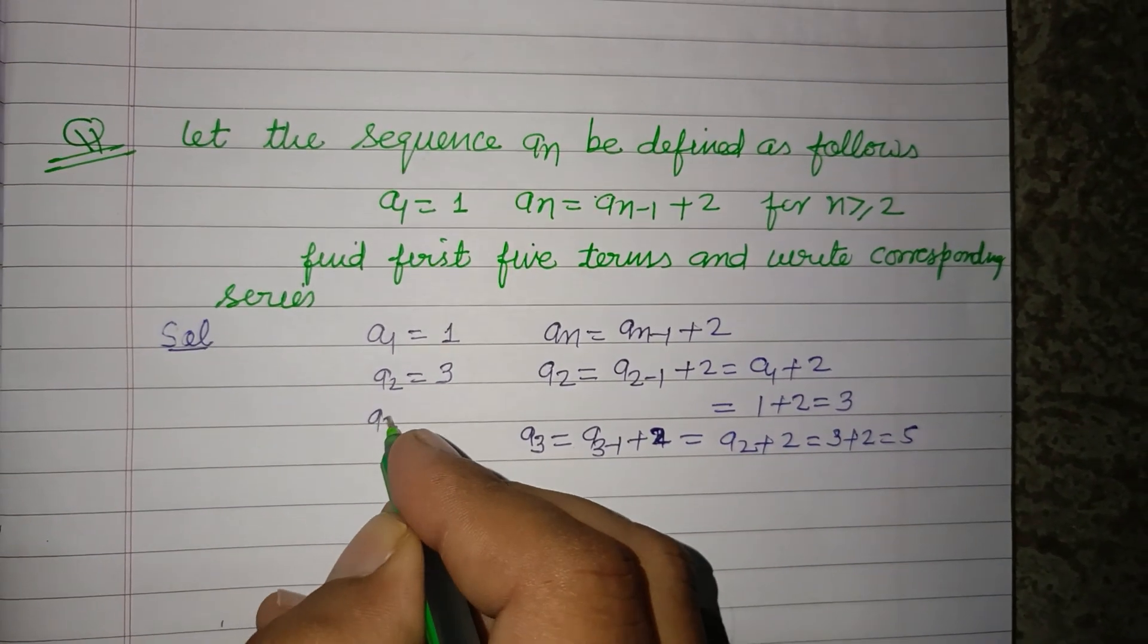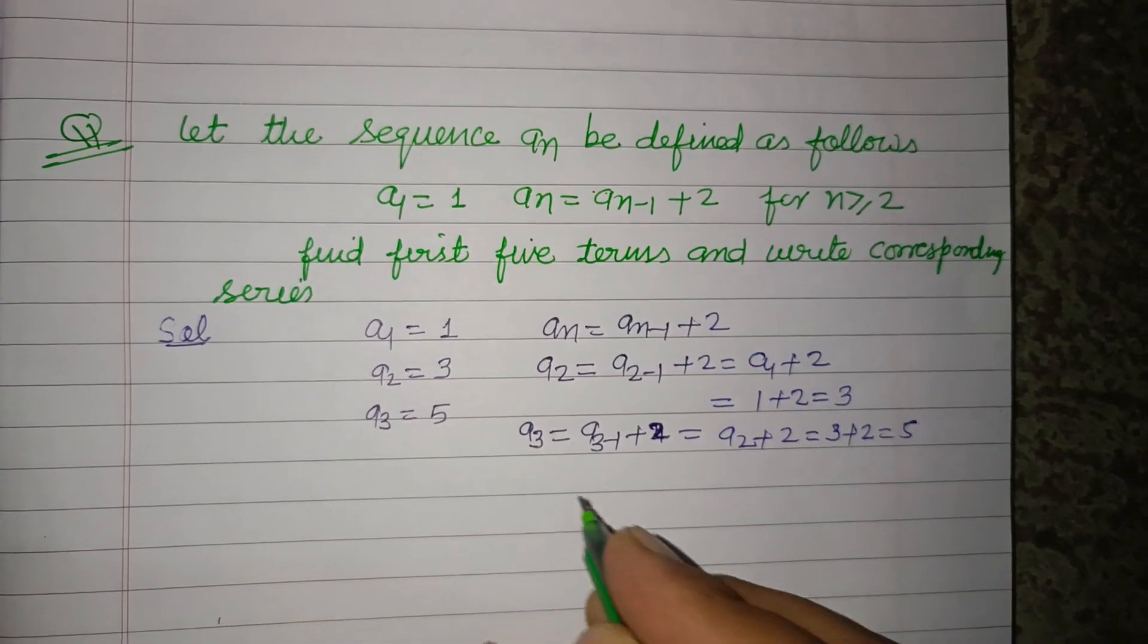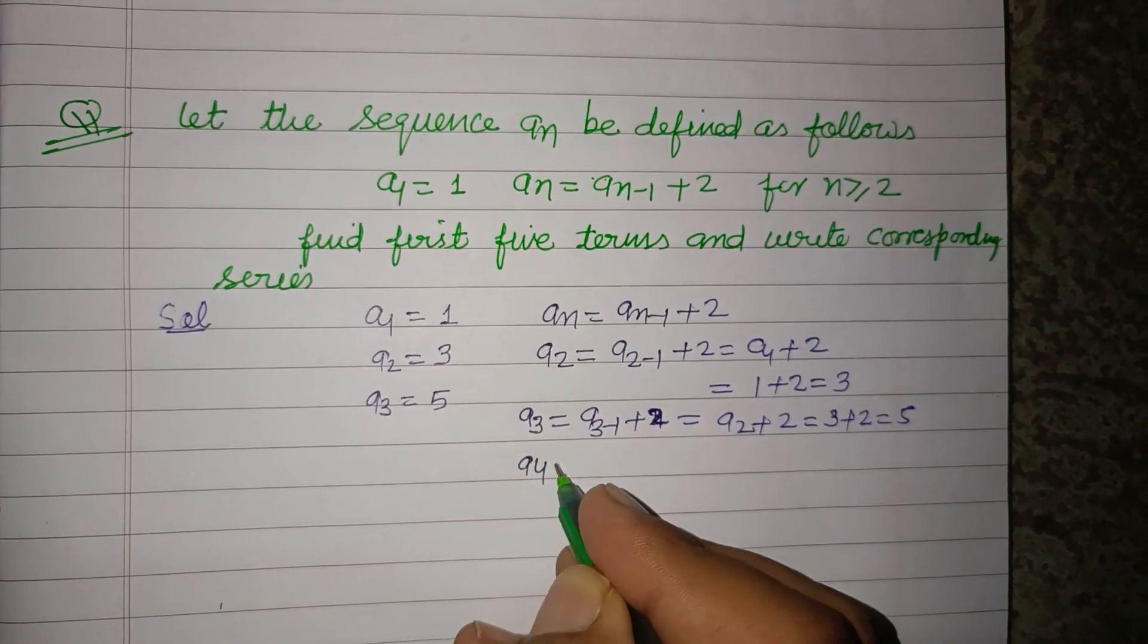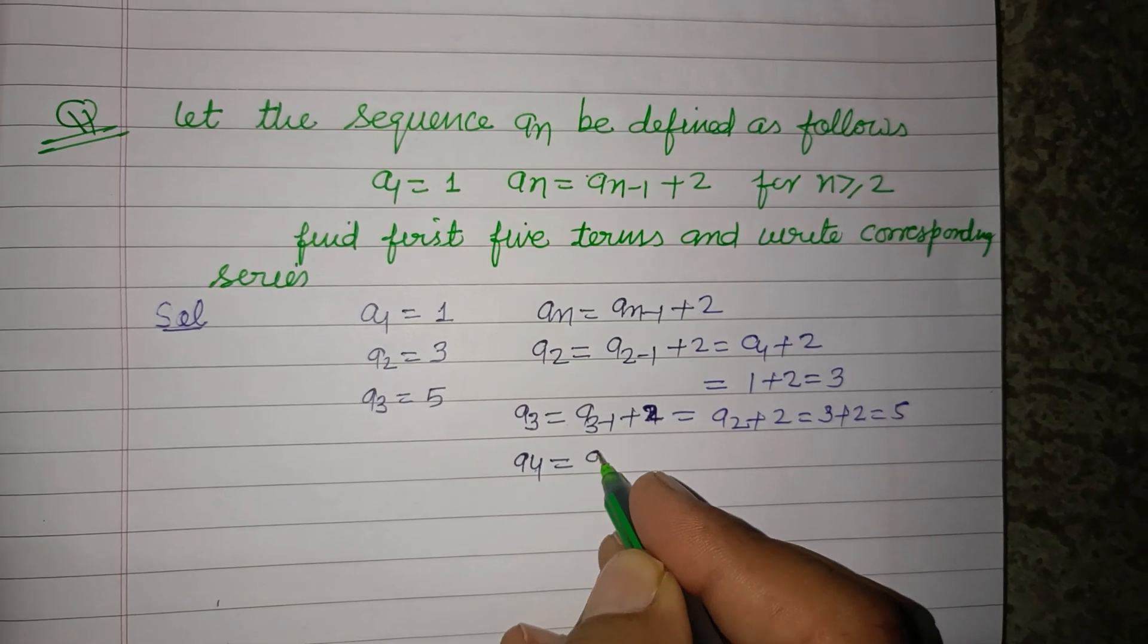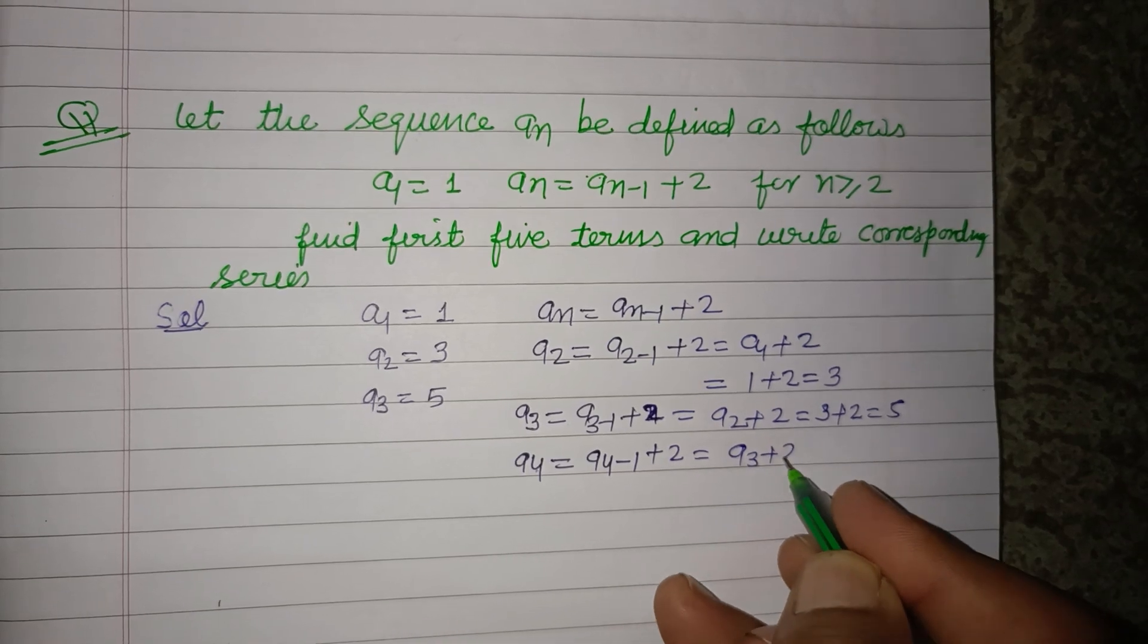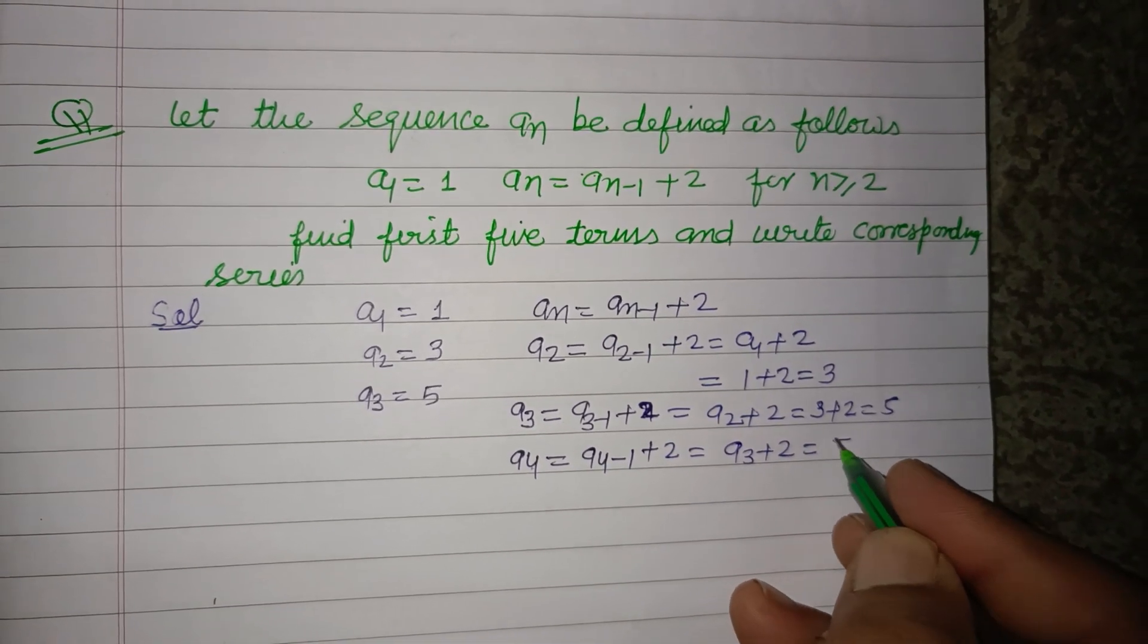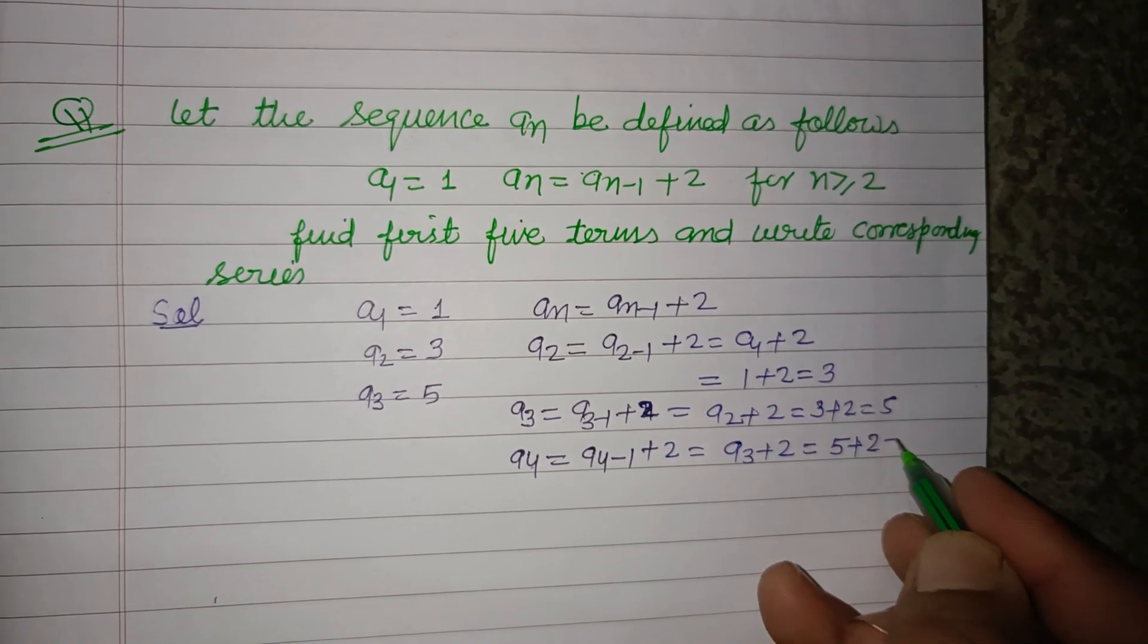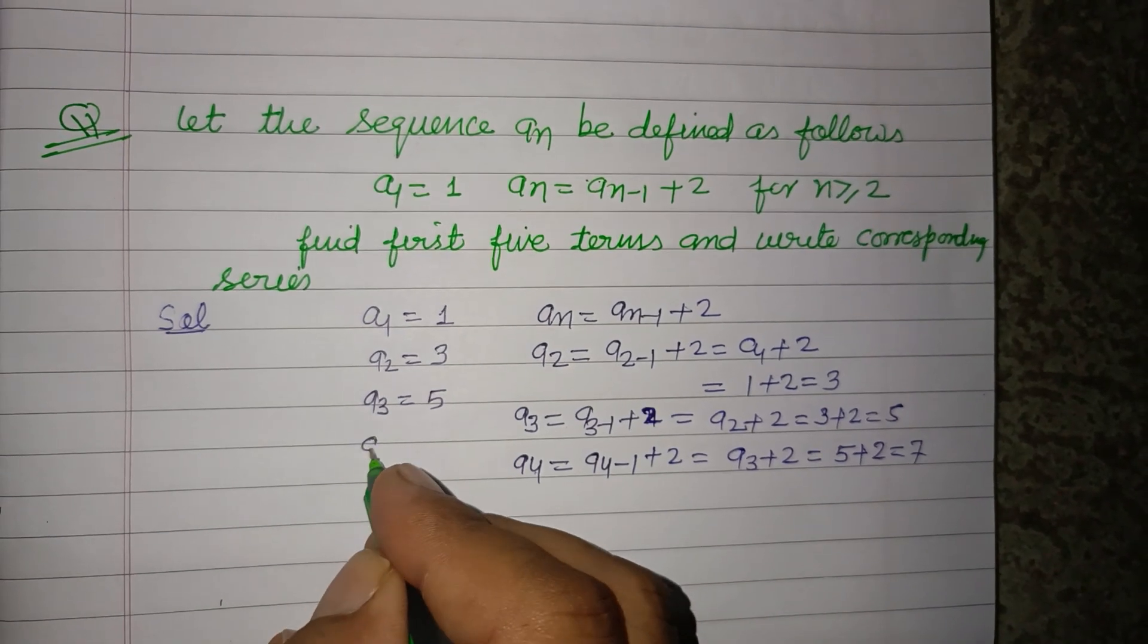So a₃ is 5. Now put n = 4, so this is a₄₋₁ + 2, that is a₃ + 2. a₃ is 5, so 5 + 2 = 7. So a₄ is 7.